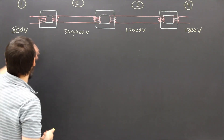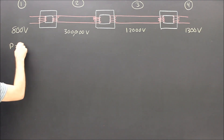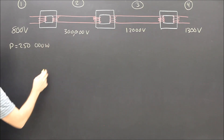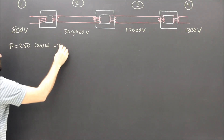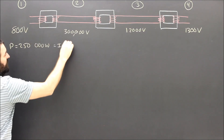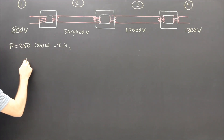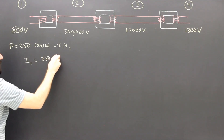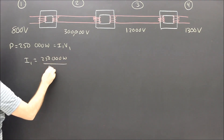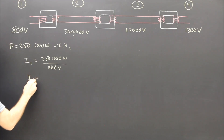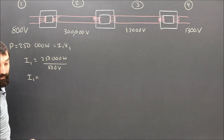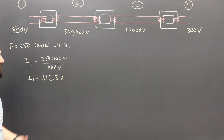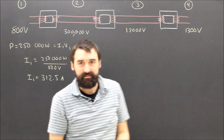The power generated was equal to 250 megawatts — 250,000 watts — and that's got to be equal to the current in stage one times the voltage in stage one, which is 800 volts. So the current in step one is 250,000 watts divided by 800 volts, and that means the current is about 312.5 amps. So the math is really easy. Piece of cake.